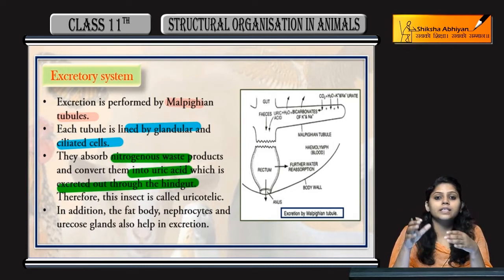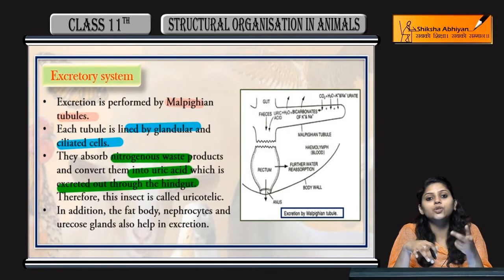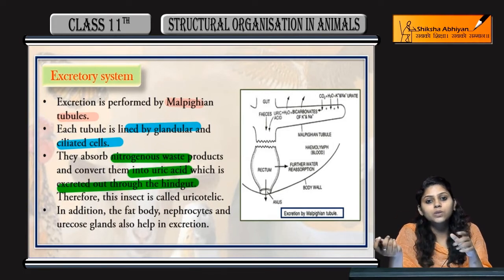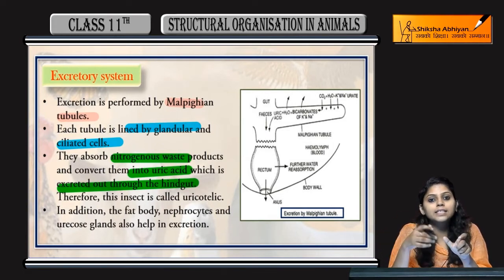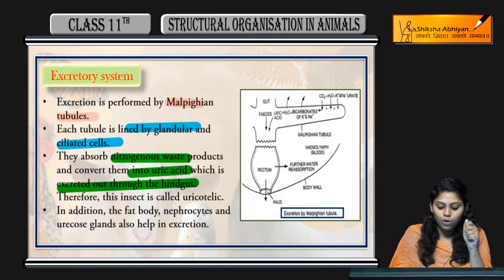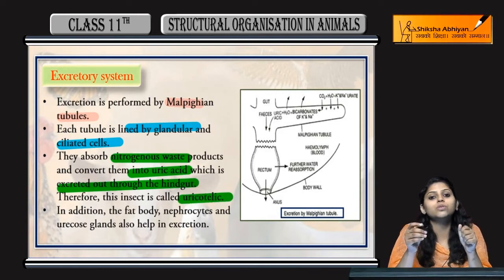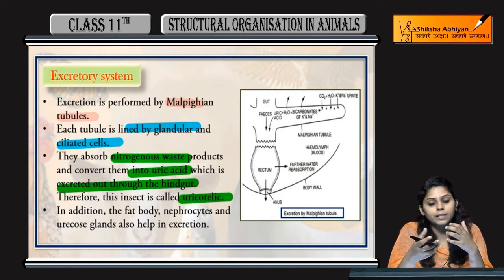Ab kya kya cockroaches ne? Kya secret kya? Kis me convert hua tha? Uric acid me - woh excret hua. Uric acid excret kerti hai, isi liye cockroaches ya insects ko uricotelic animals bolte hai.